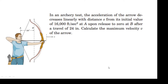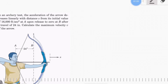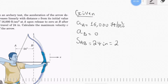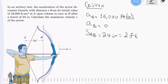Let's apply the basic concept for solving this equation. From the given information: acceleration at point A equals 16,000 feet per second squared, acceleration at point B equals zero, and the distance from point A to point B is 24 inches, which equals two feet. The acceleration is proportional to distance s linearly, but it decreases from the initial point to the final one.